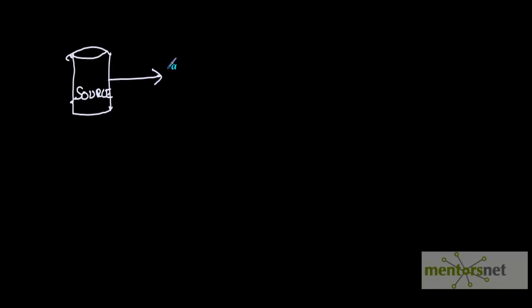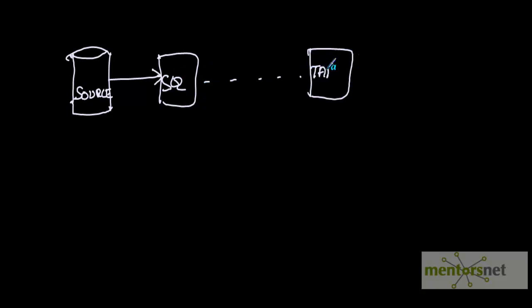Basically, the problem with the plain load we have done so far is we are taking a source and loading into the target without any transformation. We are taking a source, it goes to the source qualifier transformation, and it loads to the target. There are n number of columns coming in 1, 2, 3 to n, and we are passing the values as-is to the target.